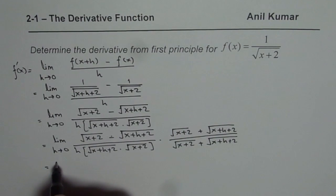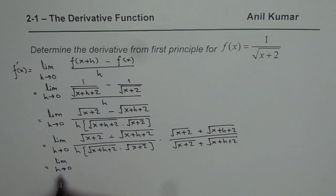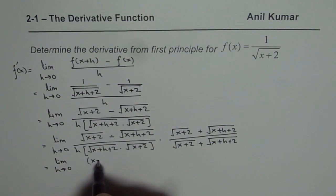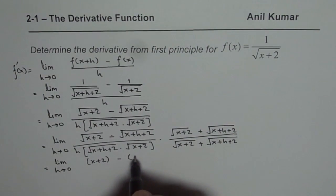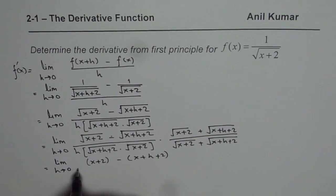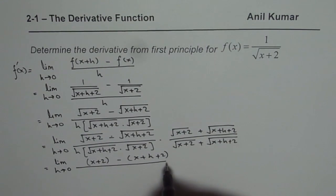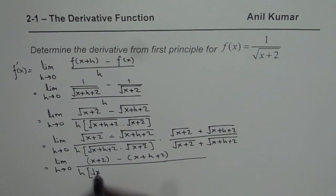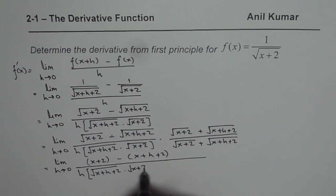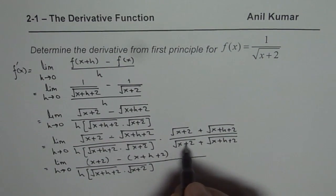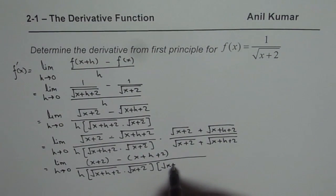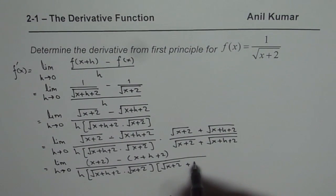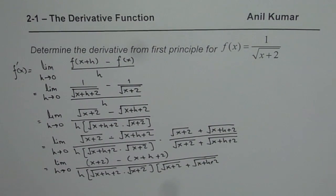Now we will use difference of squares in the numerator, that means x plus 2 minus x plus h plus 2, divided by the product: h times square root of x plus 2 times square root of x plus h plus 2 times the sum square root of x plus 2 plus square root of x plus h plus 2.